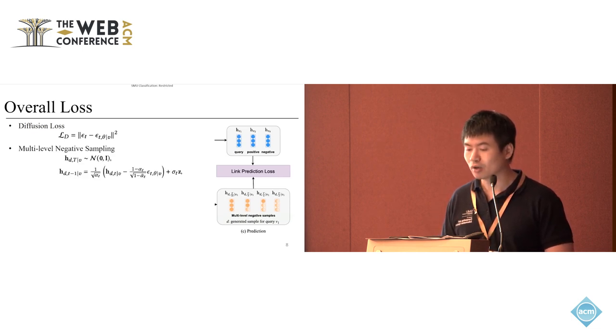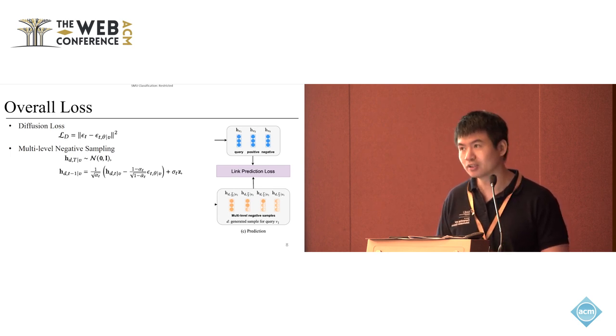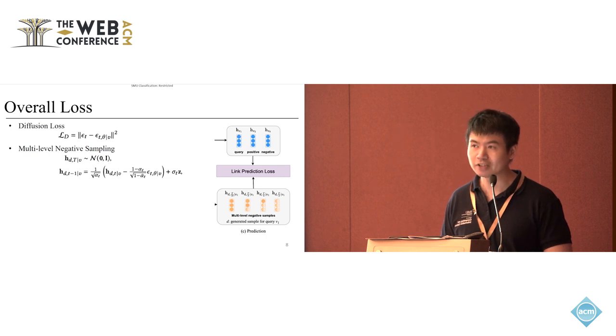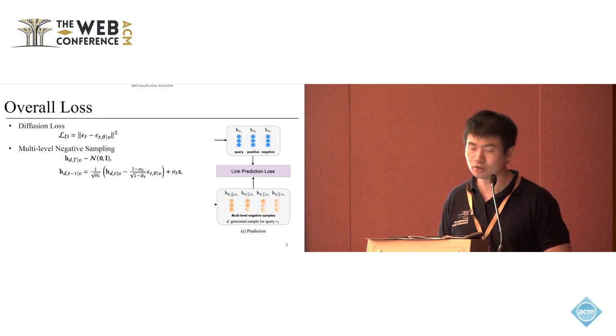This comes to our multi-level negative sampling. In multi-level negative sampling, we can control the difficulty level of the negative samples by using different timestamp t. In the diffusion model, the noises are added to the node embeddings step by step, so in each step we can add some noises. If we choose an appropriate t, we actually get a node sample.